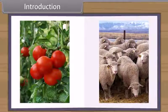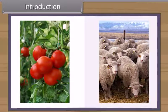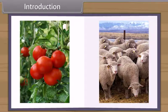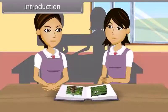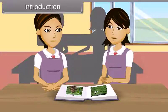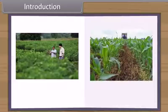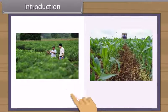We get food from plants and animals, and this is obtained either from agriculture or animal husbandry. Our scientists are busy in efforts to improve production from agriculture and animal husbandry.